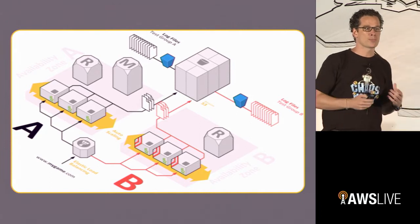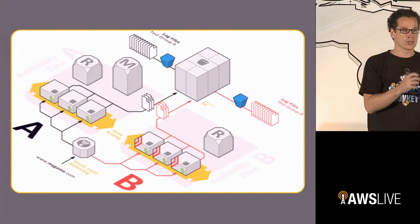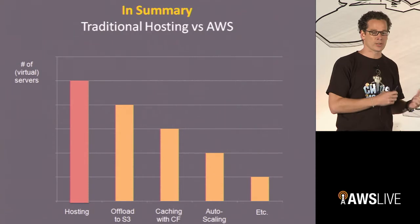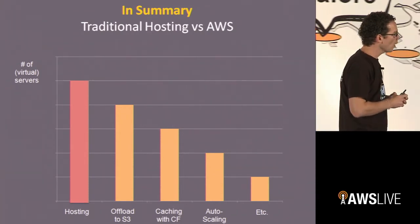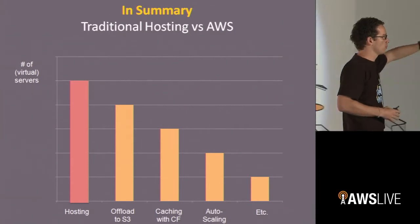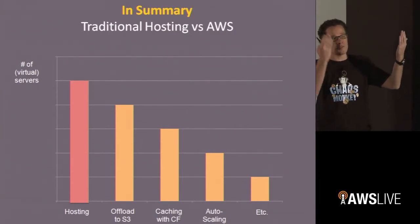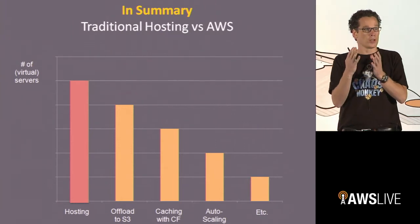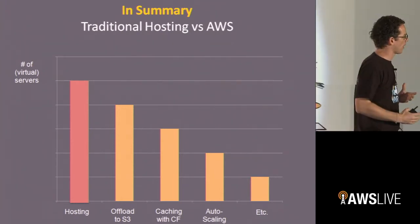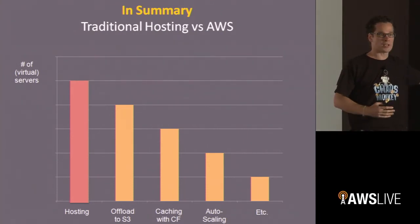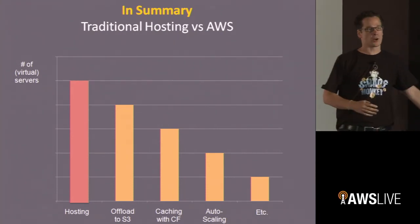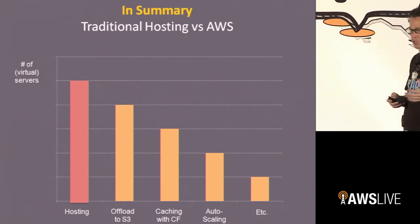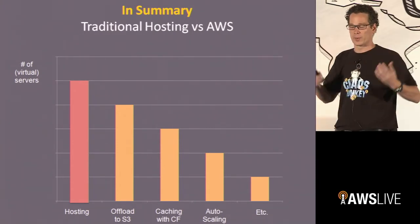Those are a couple of best practices or techniques for thinking about cost when architecting. If you think about traditional hosting versus AWS: traditional hosting you might need 50 servers. You can compare that with 50 servers on EC2 but that's not really a fair comparison — it's not really smart to use AWS purely for hosting. You want to use it because you can take advantage of all these things: offload to S3, start caching, reduce the number of servers you need, use auto-scaling. All these things help you be much more efficient, and that's where your cost benefits will come from along with increased performance.